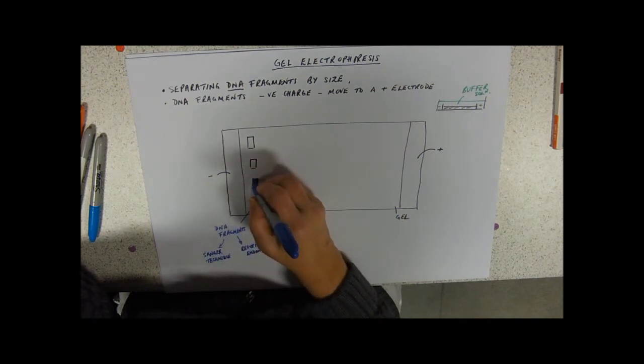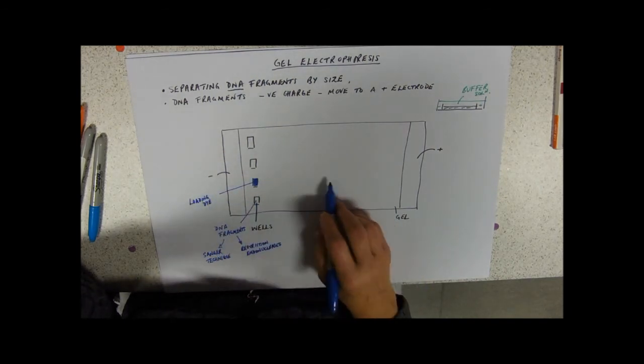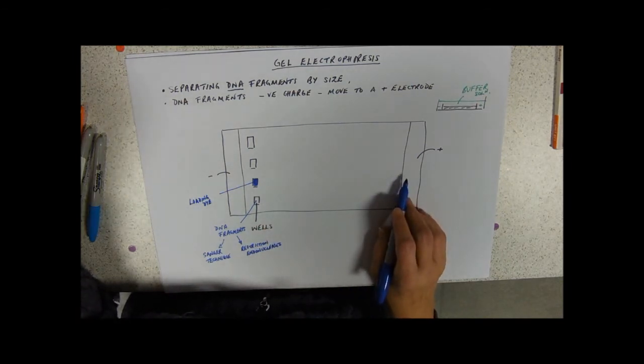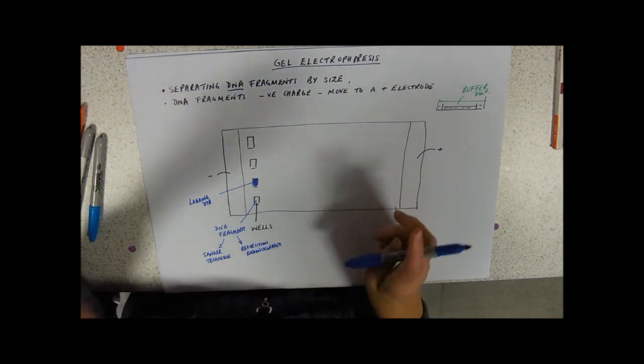So you're filling your well with those DNA fragments. And generally, you'd use what's called a loading dye as well. All that is, is so that you can see how far along it's gone. It's just to make a color. Obviously, DNA is transparent, and DNA fragments are too tiny to see anyway. So the loading dye is just to let you know when it's got to this end, how far has it got?